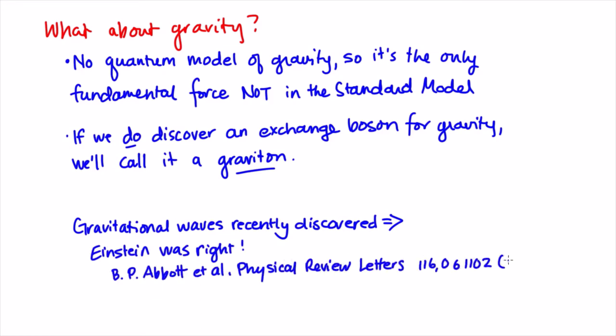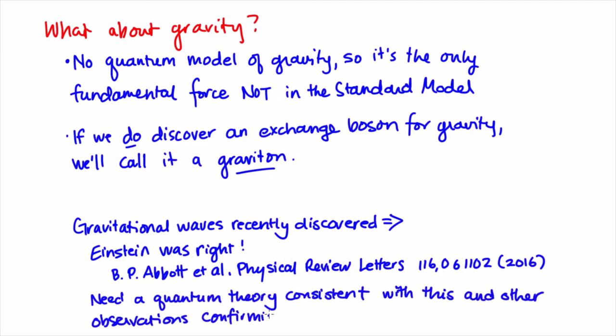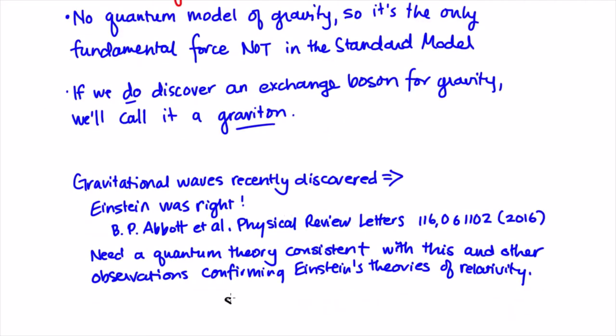This means that Einstein's theory of general relativity was right about the existence of these classical waves. But we don't yet have an idea of how to build up an experimentally verifiable quantum theory that is consistent with these observations, as well as all the other observations confirming Einstein's theories of relativity. So there's still more work to be done on this front.